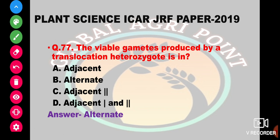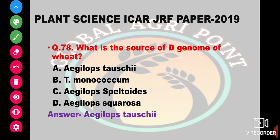The viable gamete produced by a translocation heterozygote is in adjacent 1, alternate, adjacent 2, or adjacent 1 and 2 segregation. The answer is alternate segregation.